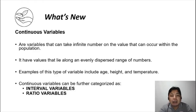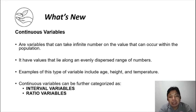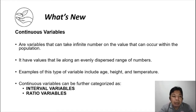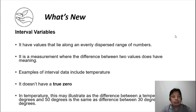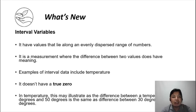Examples of continuous variables are age, height, and temperature. Continuous variables can also be categorized into two: they can either be interval variables or ratio variables. Let's discuss interval and ratio variables. An interval variable is a type of continuous variable; therefore, like continuous variables, it also has values that lie along an evenly dispersed range of numbers.